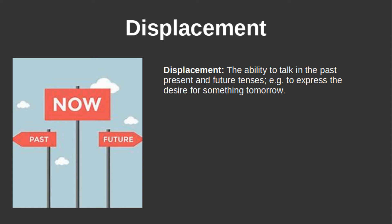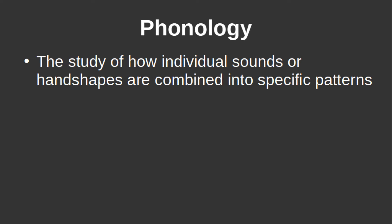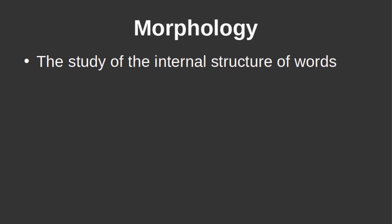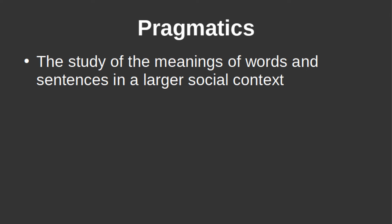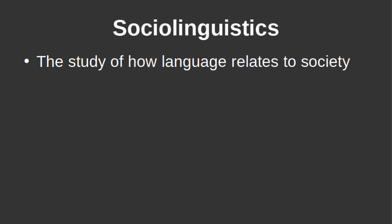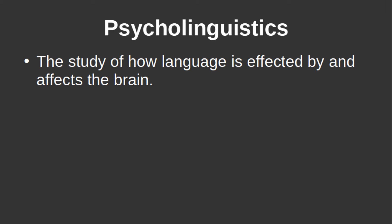Now, we can discuss the many forms of linguistics. There is phonetics, which is the study of individual sounds in spoken languages, or handshapes in sign languages. There is phonology, the study of how individual sounds or handshapes are combined into specific patterns. Then there is morphology, the study of the internal structure of words. Syntax, which is the study of how words group together to make sentences. Pragmatics, or the study of meanings of words and sentences in a larger social context. Then there are some others, such as sociolinguistics — how language relates to society — historical linguistics, or how language has changed over time, and psycholinguistics, and how language is affected by and affects the brain.